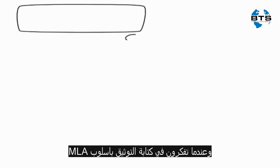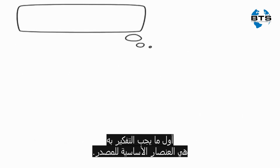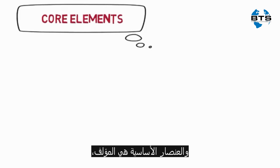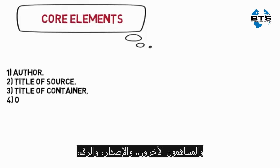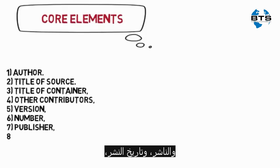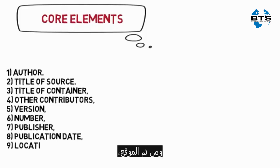When thinking about how to cite sources in MLA format, the first things to consider are the core elements of the source. The core elements are: author, title of source, title of container, other contributors, version, number, publisher, publication date, and location.